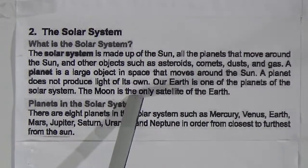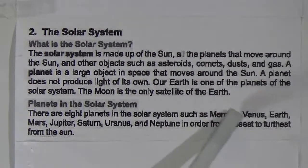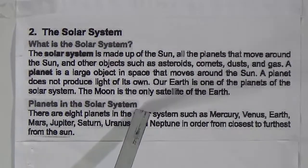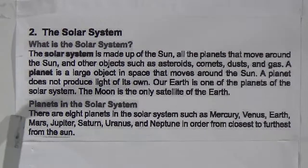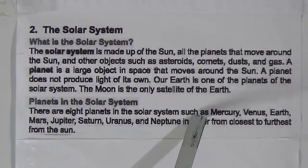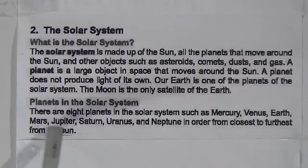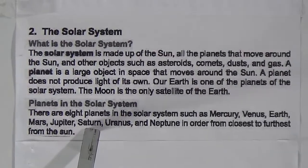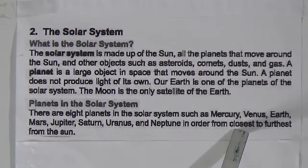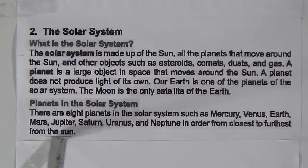The moon is the only satellite of the Earth. There are 8 planets in the solar system: Mercury, Venus, Earth, Mars, Jupiter, Saturn, Uranus, and Neptune, in order from closest to furthest from the sun.